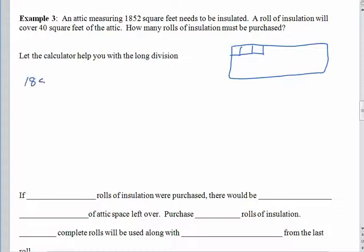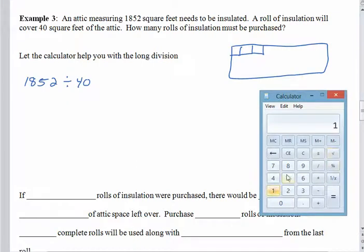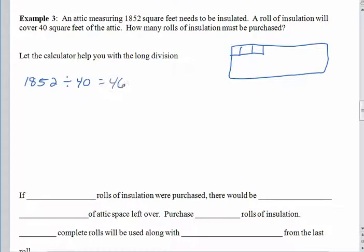We are taking these 1,852 square feet and dividing by the 40. How many pieces of 40 are in 1852? Because each piece of 40, of course, represents one roll of insulation. So let's grab the calculator. 1,852 divided by 40. And this says 46.3. So how many rolls of insulation do we need? Well, sometimes your gut is telling you to round down that you only need 46 rolls. But this wouldn't be exactly right. We are certainly going to need 46 whole rolls. But then we need a little bit more.